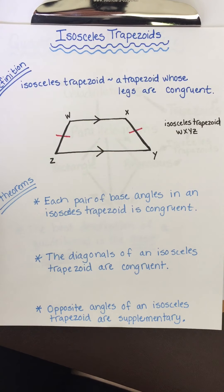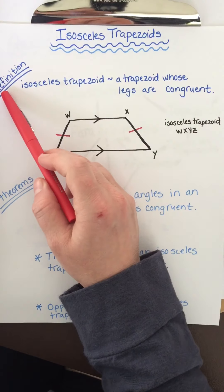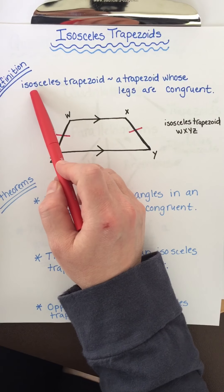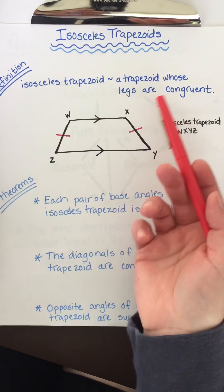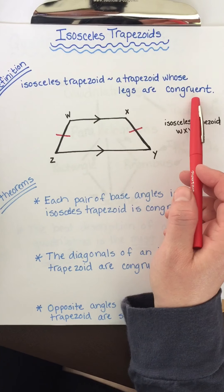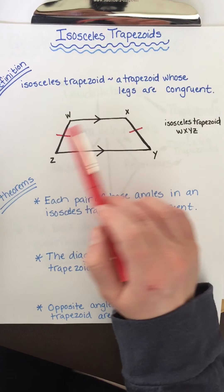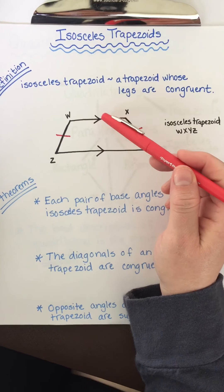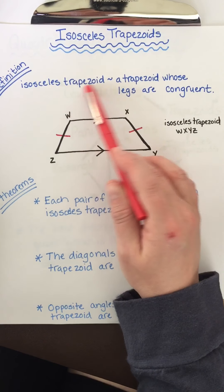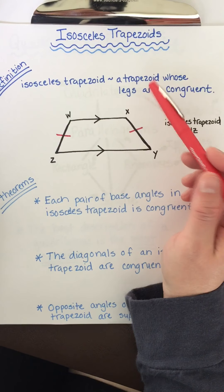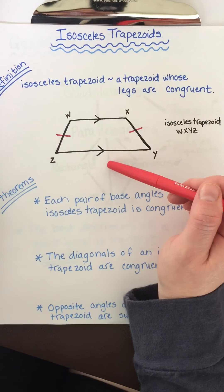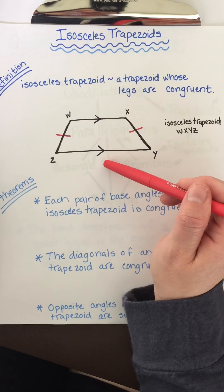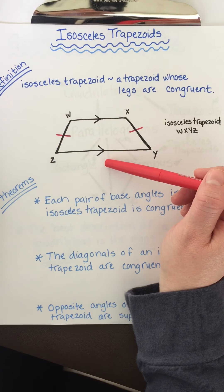Hello students. Today we're going to talk about isosceles trapezoids. The definition of an isosceles trapezoid is a trapezoid whose legs are congruent — I have them marked here to show that they're the same length. A trapezoid is a quadrilateral with one pair of parallel sides.